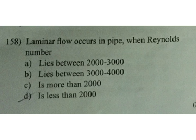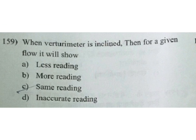When a venturimeter is inclined, then for a given flow it will show: A less reading, B more reading, C same reading, D inaccurate reading. C is the answer.